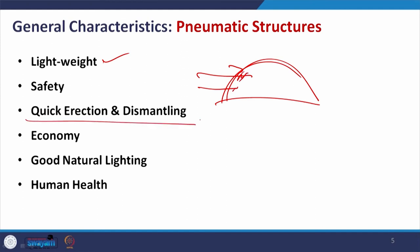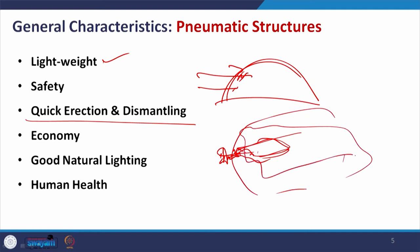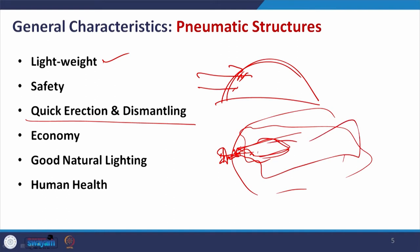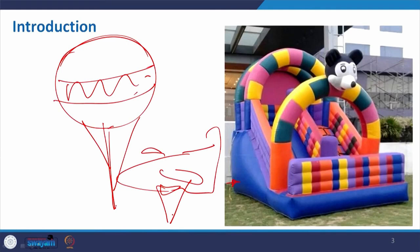Quick erection and dismantling is definitely the case. For the inflatable sofa, you start with a very small folded material, connect an electric air pump, and it inflates, creating volume and giving form. It can be erected very quickly. For the kids' play facility, we do not need to transport the full structure from one fairground to another — we remove the air, fold it, and transport it easily.